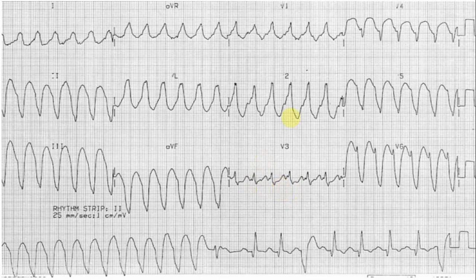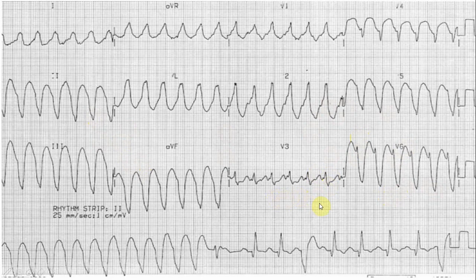Let's look at another patient. Going through the Brugada criteria systematically: Step 1 concordance — in V1 positive, V2 positive, V3 positive, but V4, V5, V6 are negative, so concordance is absent. We move to Step 2: Brugada sign — from the beginning of the R wave to the S nadir is about 4 small squares (approximately 160 ms), so the Brugada sign is present — this is VT. P waves are not obvious, so AV dissociation cannot be commented upon.